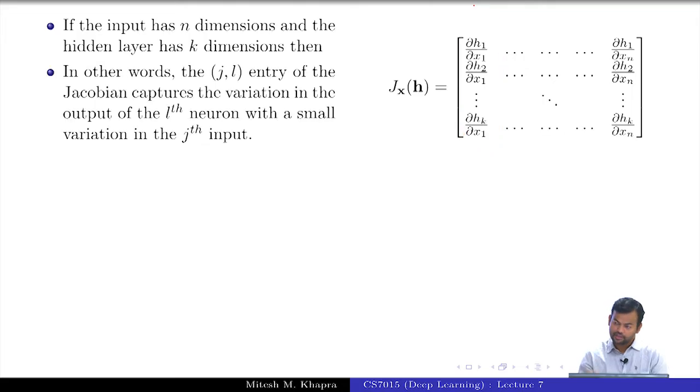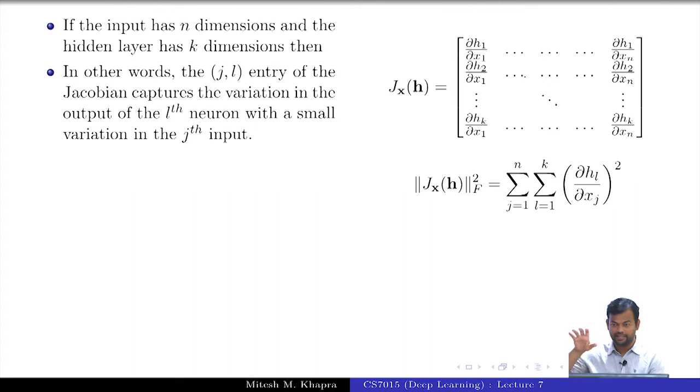What does the j,l-th entry here capture? What does a derivative capture? How much does h_l change with a small change in x_k. What is the Frobenius norm? It is just the sum of the squares of all the elements of the matrix. It's basically how much each of these elements vary with respect to the input.